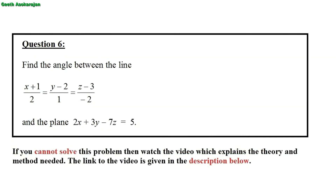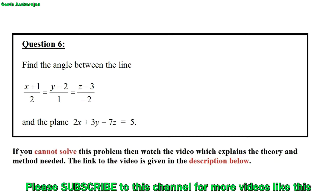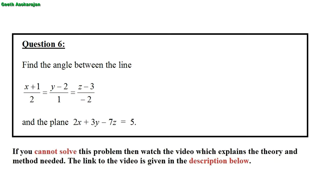In this video I'm going to do a revision question on vectors. Question number six: find the angle between the line, given in Cartesian form as (x+1)/2 = (y-2)/1 = (z-3)/(-2), and the plane, also in Cartesian form, 2x + 3y - 7z = 5.